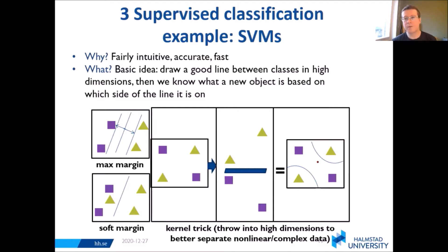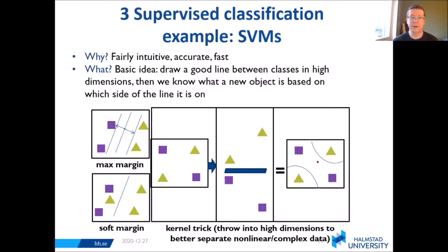In the real world, we always have noise. We have data that may not be labeled correctly, and various reasons why we want to permit errors and avoid overfitting. So you can use a soft margin to do that — it permits some errors.